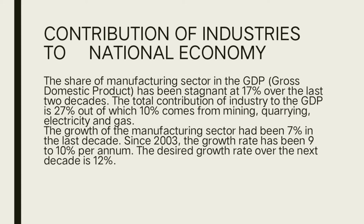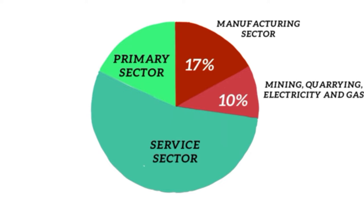The contribution of industry to national income: the share of the manufacturing sector in GDP has been stagnant at 17% over the last two decades. The total contribution of industry to GDP is 27%, out of which 10% comes from mining, quarrying, electricity, and gas. The growth of the manufacturing sector had been 7% in the last decade; since 2003, the growth rate has been 9–10% per annum, and the desired growth rate is targeted to reach 12% in the next decade. A pie graph shows the service sector, primary sector, and manufacturing sector at 17%, with mining and quarrying at 10%.